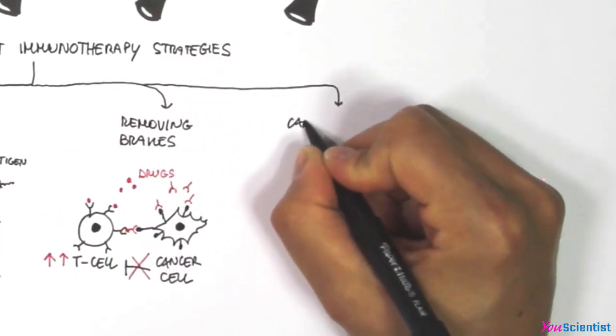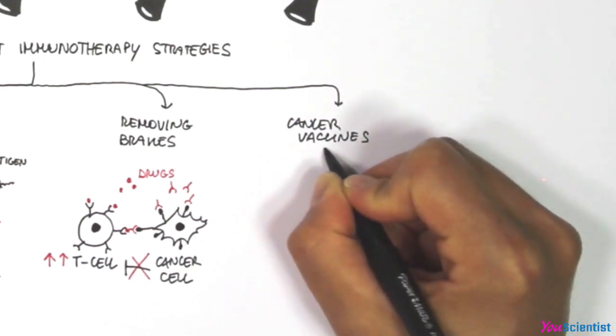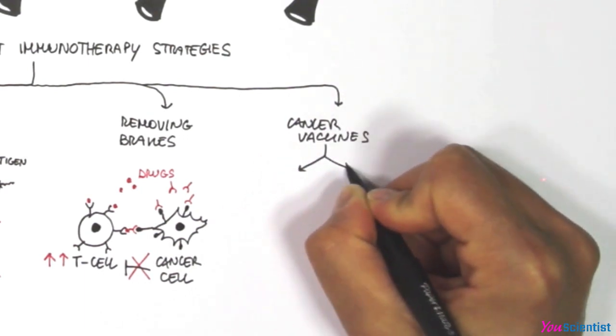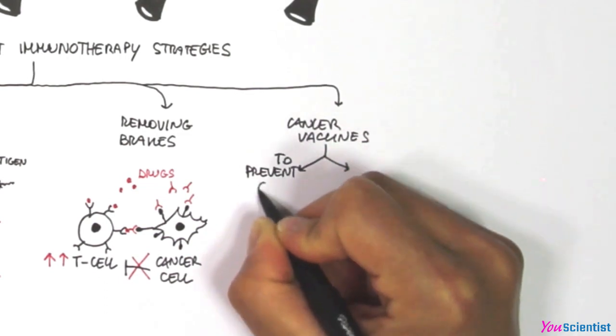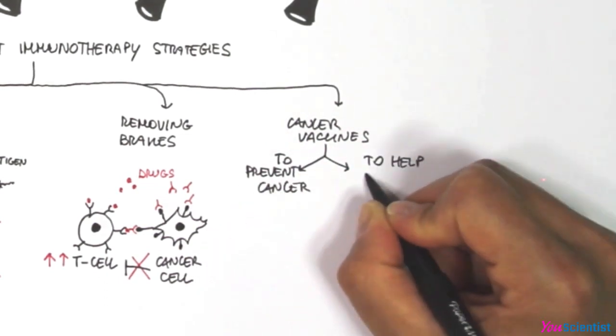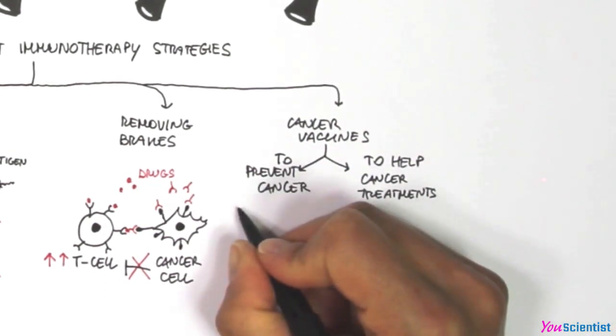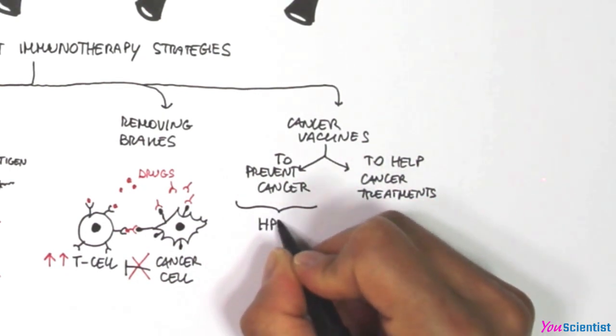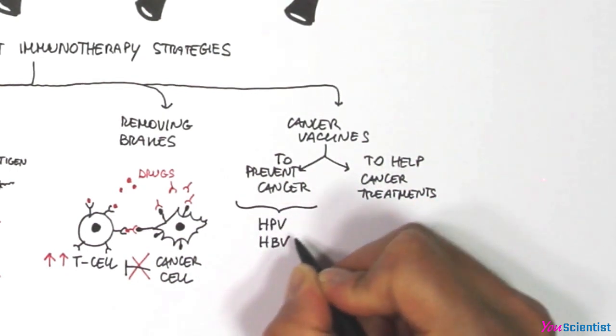Another strategy relies on cancer vaccines. There are two different types of cancer vaccination: vaccines to help prevent cancer and vaccines to help cancer treatment. Some cancers are caused by viruses, as in the case of HPV and HBV.